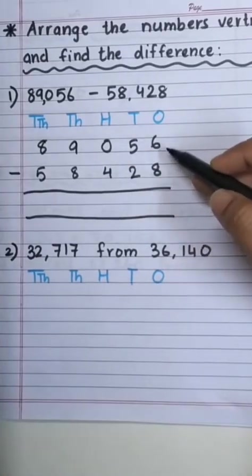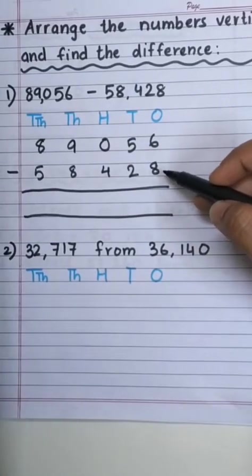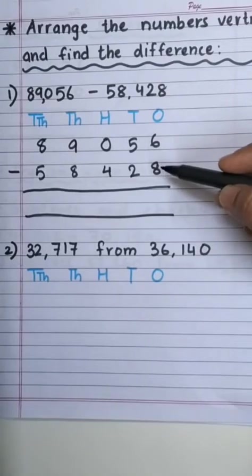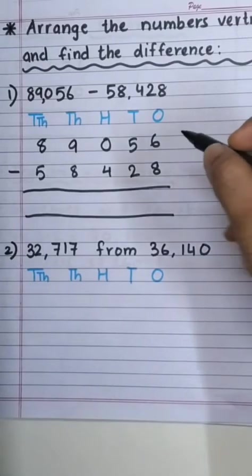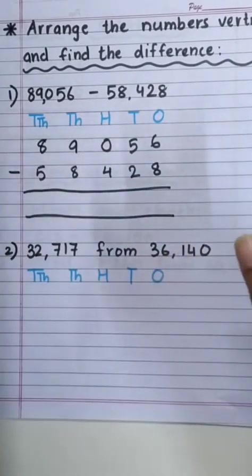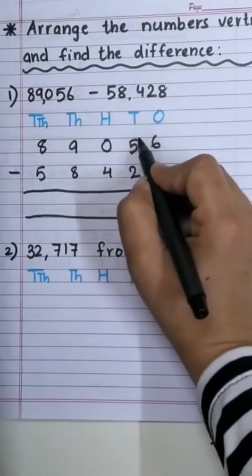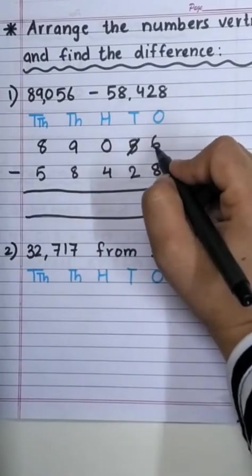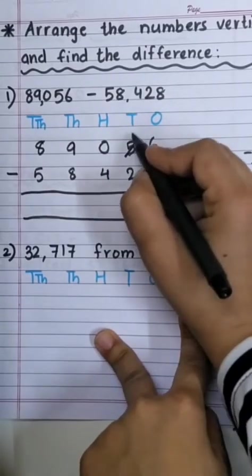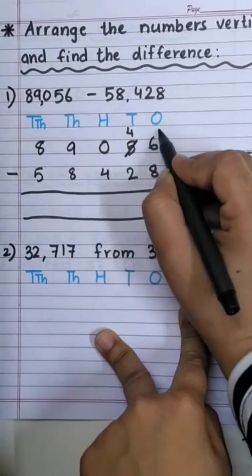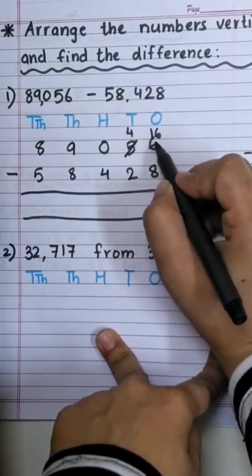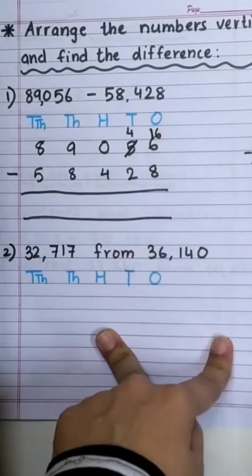Now over here, 6 is smaller than 8. Then 6 will have to seek help because 8 being bigger cannot be subtracted from 6. So, 6 will go to 5. And just like you, the numbers are very kind. They will never say no to help. So, 5 will give 1 to 6 because of which 5 minus 1 will be 4. So, here we will write 4 and this will be 16.